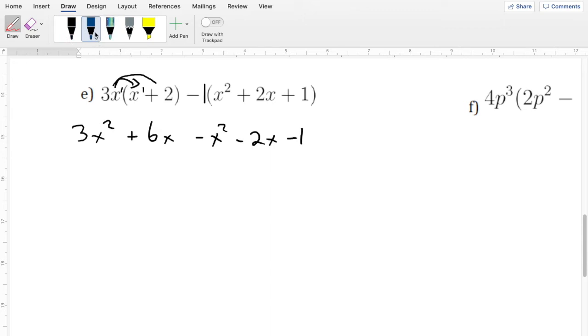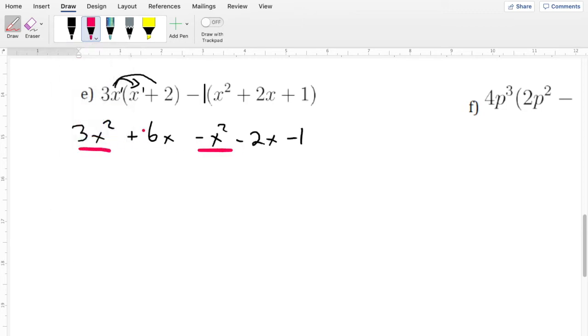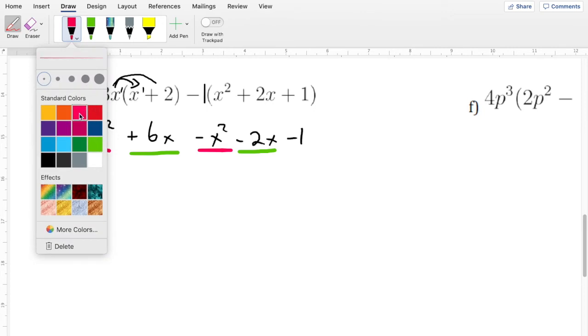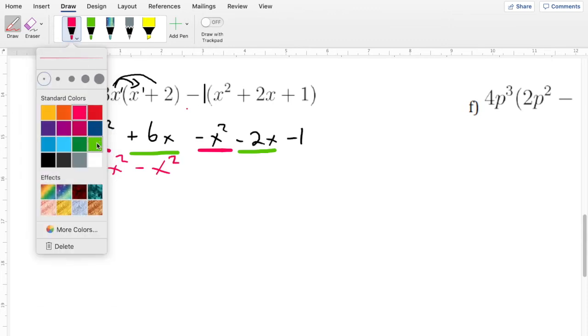So if we go and color code these, let's go pink first. x squared is in pink. Then we'll do green for x's. And we just have this one left, so I'm not going to really write that anything else. So as I reorganize, it's going to be 3x squared minus x squared. That's going to be plus 6x minus 2x.